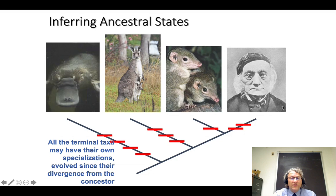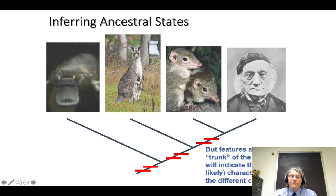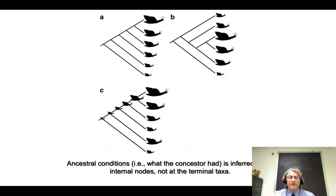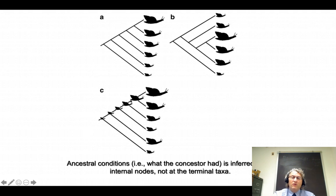If we're interested in the origin of humans, we would be interested in the transformations that occur along the trunk toward that form — that would tell us something about the transformations relative to the origin of humans. The tips do not give us information directly about what the transformations were; they're going to be used to infer what the transformations would be along the cladogram at the internal nodes.